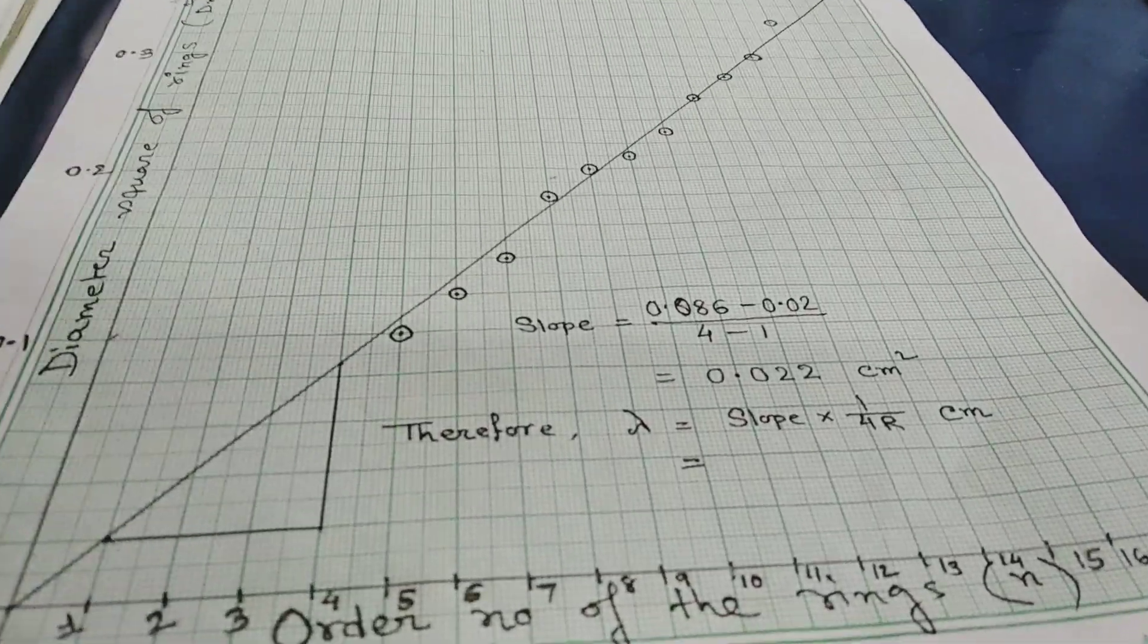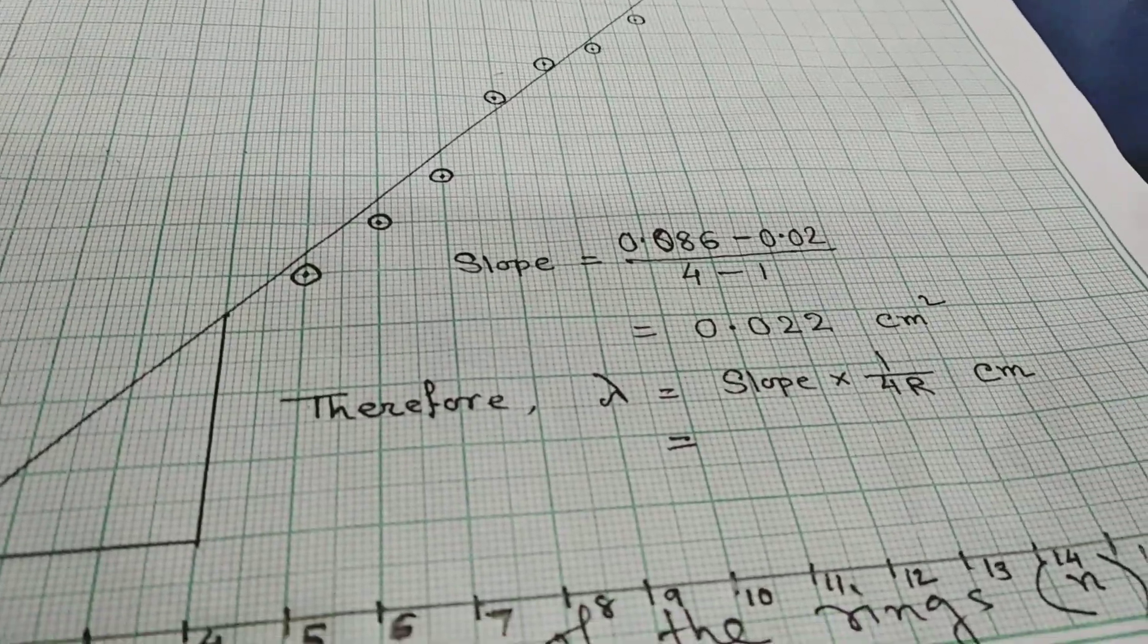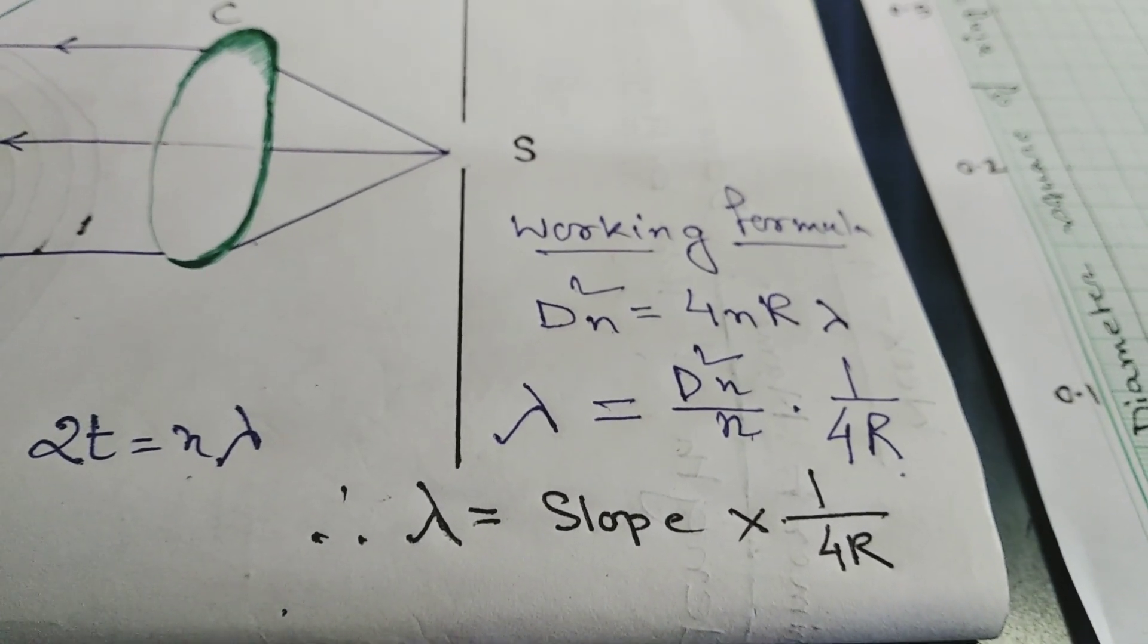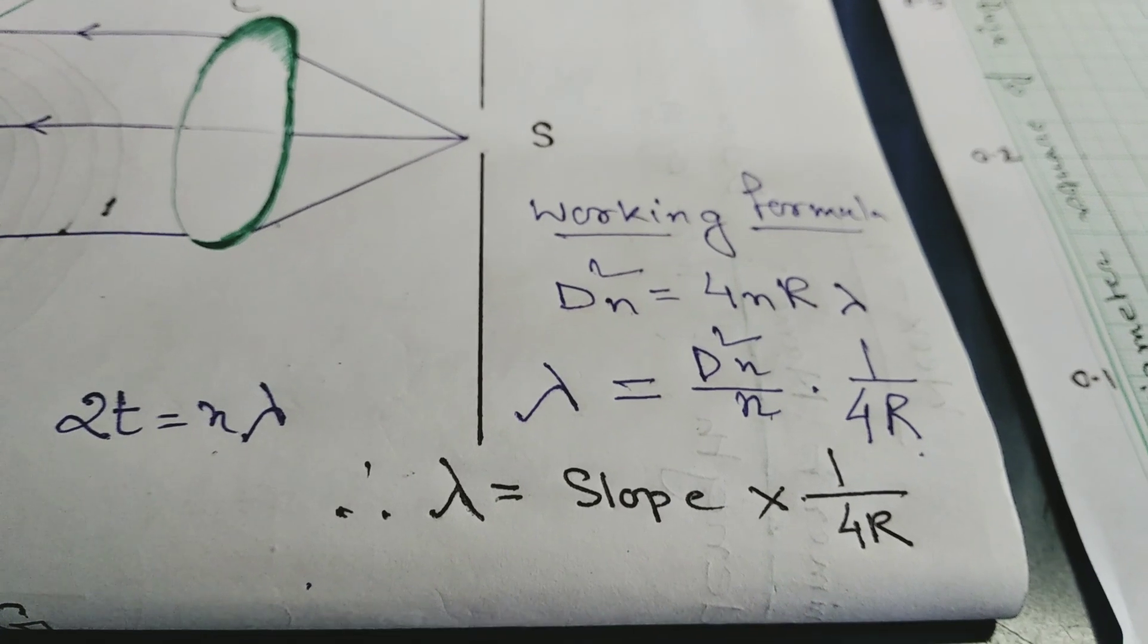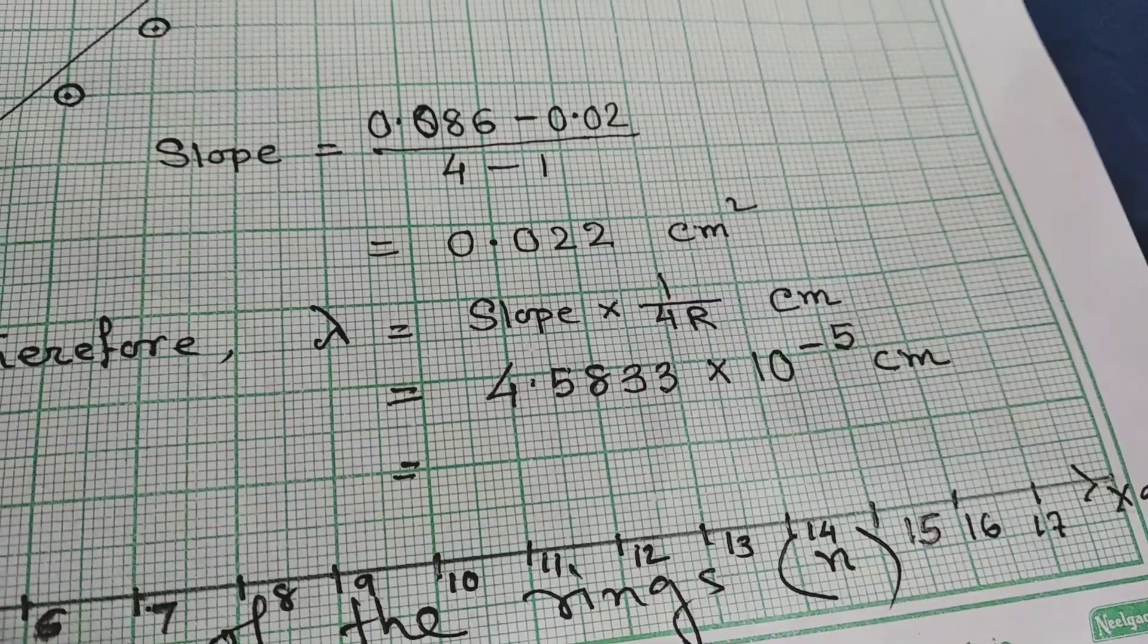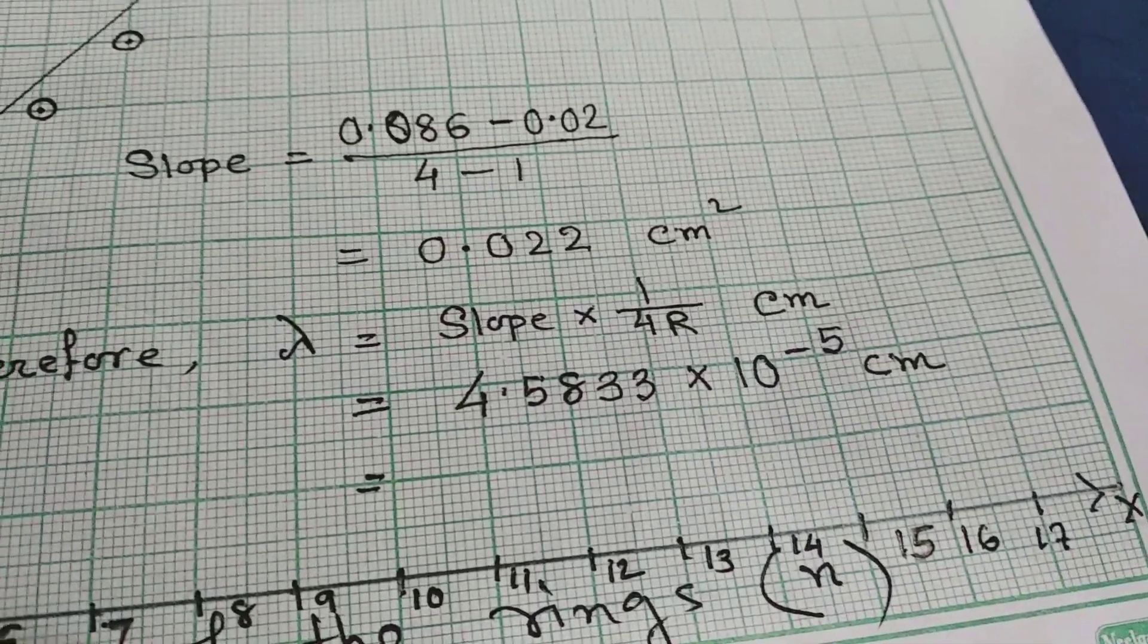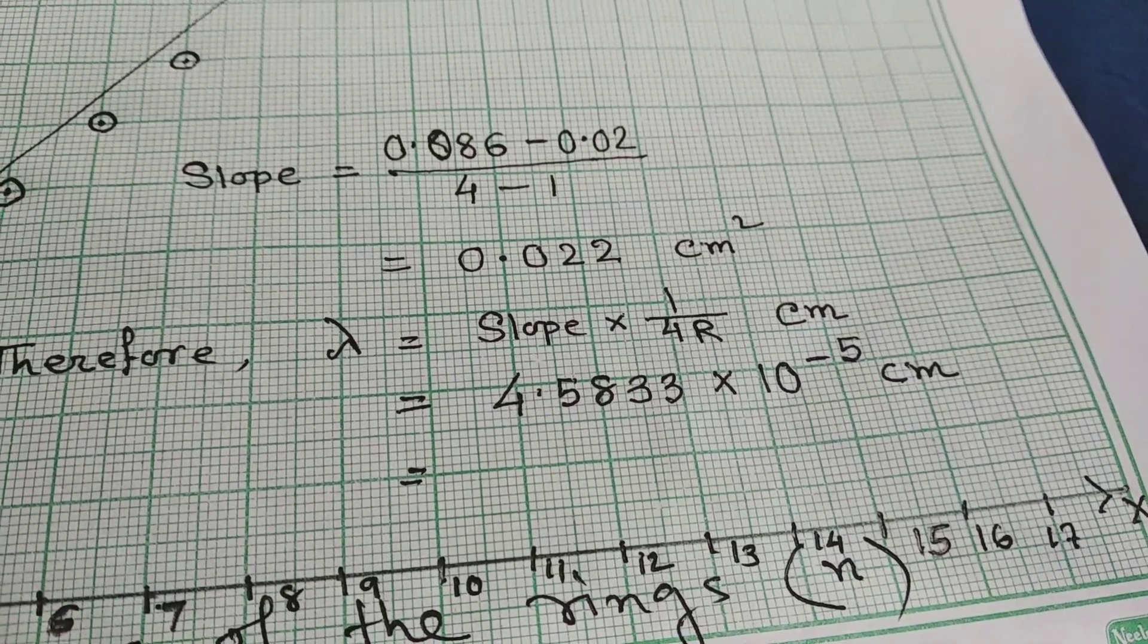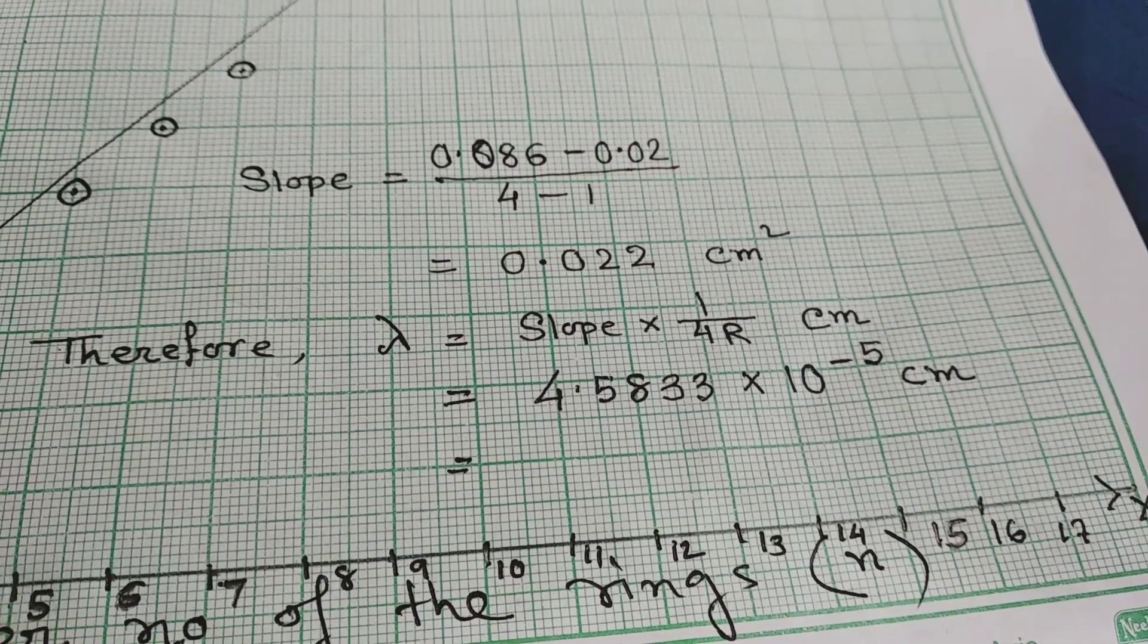The working formula of lambda is diameter square divided by order number into 1 by 4 into capital R. After calculating, we have got 4.5833 into 10 to the power minus 5 cm.